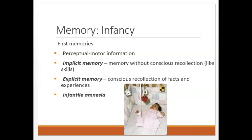Most of their memory, however, is implicit memory — they retain skills, but they don't have a conscious recollection of it. The prefrontal cortex and the hippocampus, the part of the brain that forms new memories, aren't mature enough yet for long-lasting explicit memories. In fact, most people can't remember much of anything from before they were three years old. We call this phenomenon infantile amnesia.